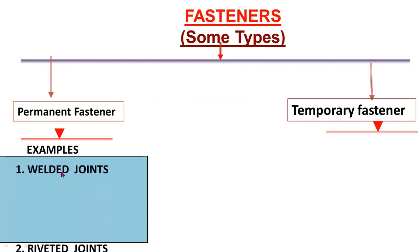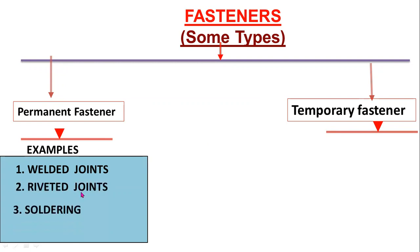The examples of permanent fasteners are: welded joints, riveted joints, soldering, and brazing.